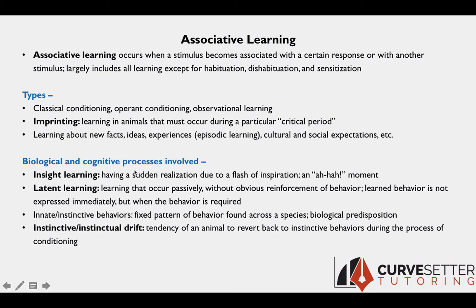There are some specific terms to know for the MCAT regarding processes involved in associative learning. Insight learning is when you have a sudden realization, almost like a flash of inspiration — an 'aha' moment, like Jimmy Neutron's brain blast. Insight learning can't really be planned; it just has to come to you.